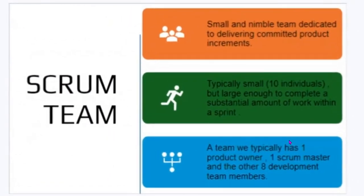What is a Scrum Team? A Scrum Team is a small and nimble team dedicated to delivering committed product increments. Teams come together to deliver a project to completion, and it must lead to an increment — the project must bring about progress. It's typically small; most times a team is made up of 10 individuals, but it can be larger. Usually we have one Scrum Master, a product owner, and eight other development team members, though the minimum should be 10 members.